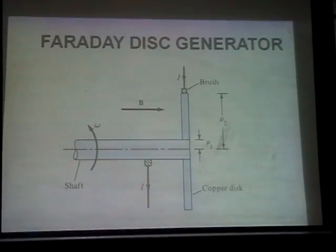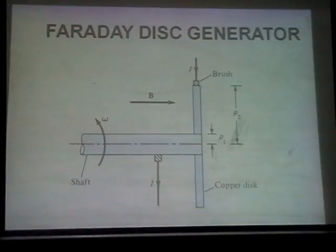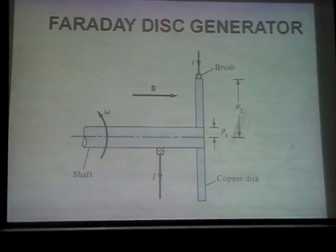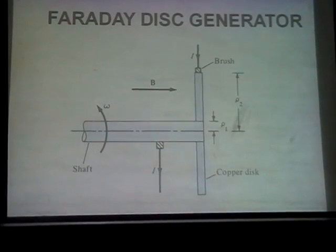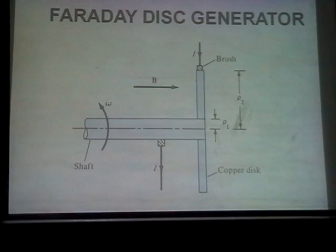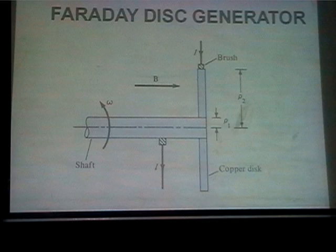Faraday's homopolar generator, or Faraday disk generator, was the very first kind of generator Faraday developed. He was playing with a copper disk, connected a bulb between the disk and the shaft, and suddenly the bulb was glowing. He was rotating the disk, the bulb was glowing, and then he got the idea: why not put more disks and get more voltage? That is how he developed the generator.